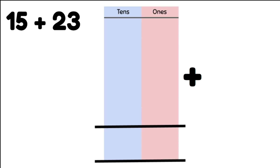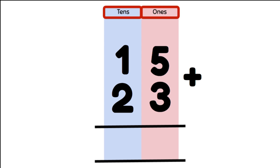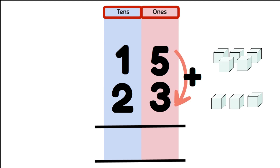15 plus 23. Using the column method, you're going to write one number on top of the other, lining them up so that the ones are on top of each other and the tens are on top of each other. We start by adding our ones column first — five ones plus three ones.